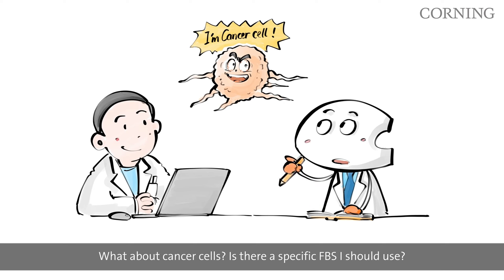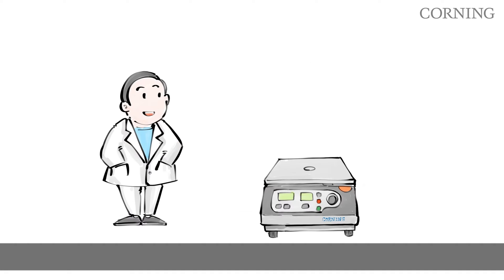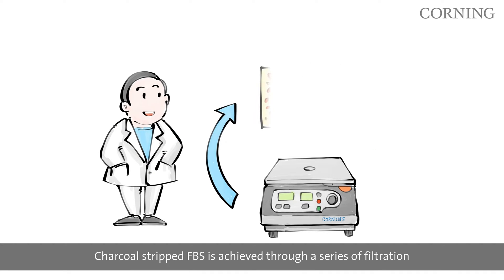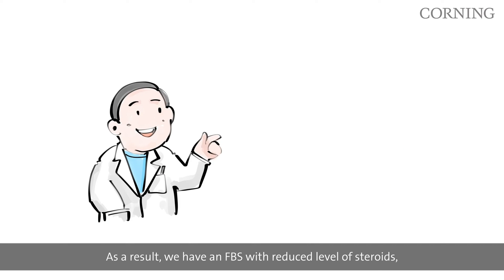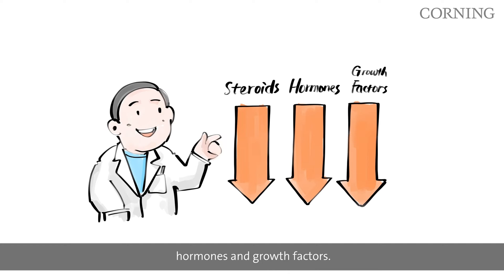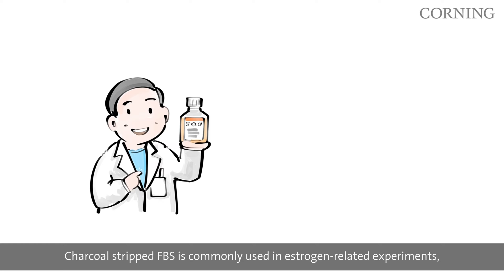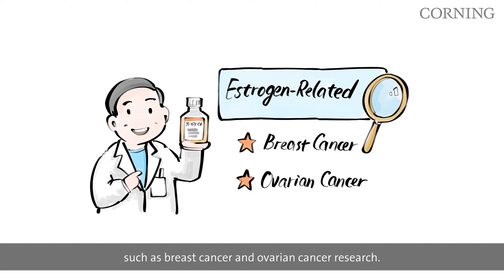What about cancer cells — is there a specific FBS I should use? You can apply our charcoal stripped FBS. Charcoal stripped FBS is achieved through a series of filtration and centrifugation processes, resulting in an FBS with reduced levels of steroids, hormones, and growth factors. It is commonly used in estrogen-related experiments such as breast cancer and ovarian cancer research.